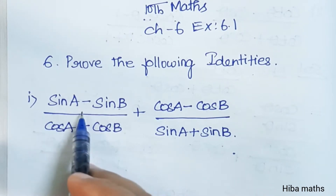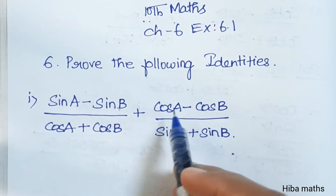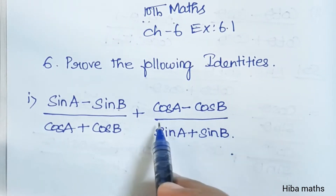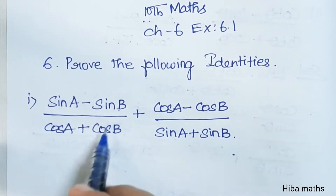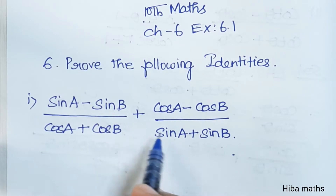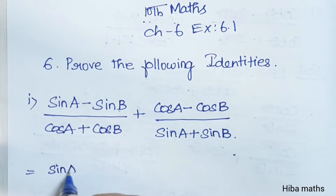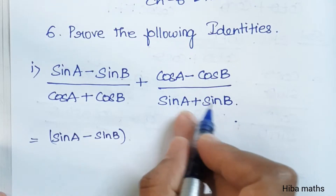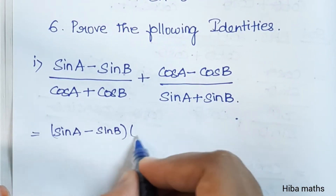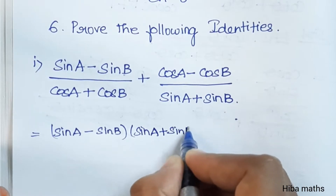First question: (sinA minus sinB) divided by (cosA plus cosB), plus (cosA minus cosB) divided by (sinA plus sinB). Two different terms are added together, plus sinA minus sinB times cosA minus cosB divided by sinB.